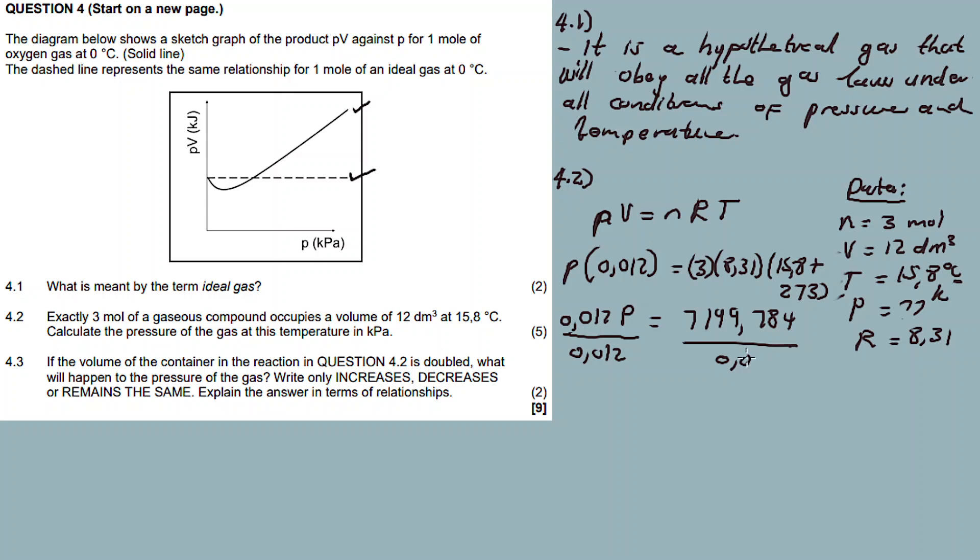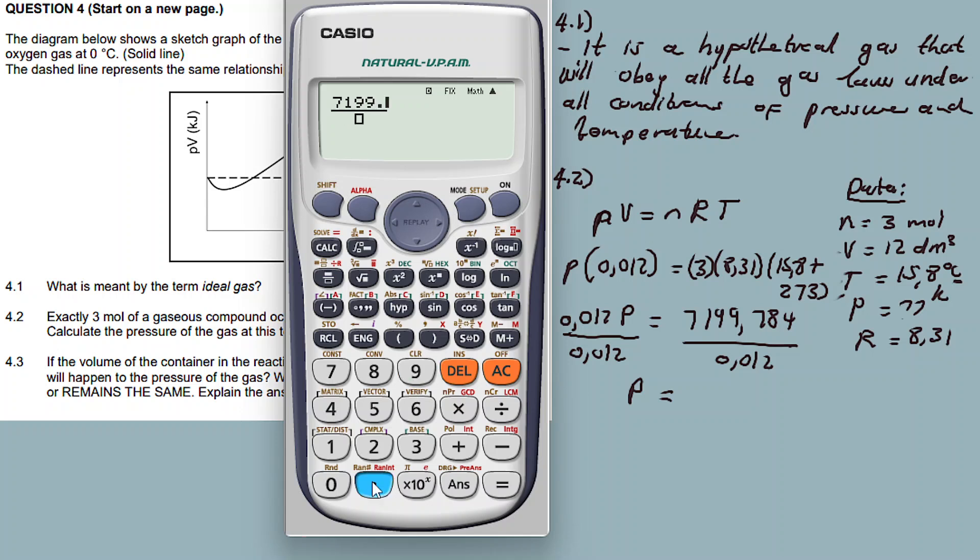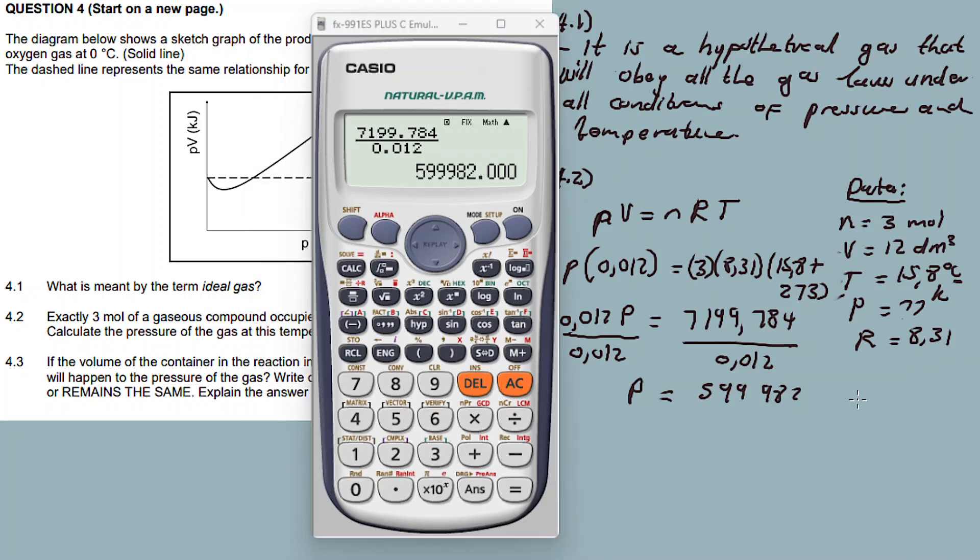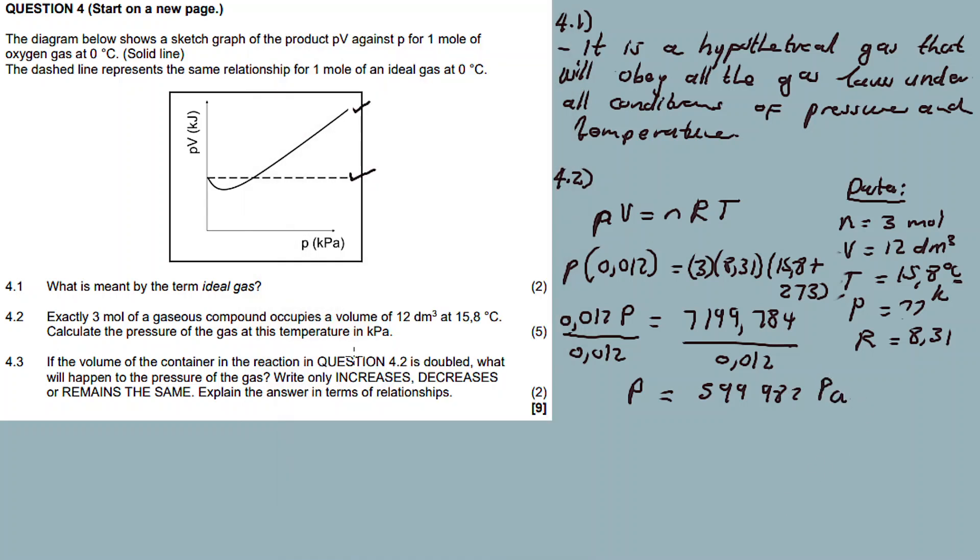So 3 times 8.31 times (15.8 + 273) equals 71999.784 Pa. Then P = 71999.784 / 0.012 = 599,982 pascals. But the answer must be in kilopascals, so divide by 1000: P = 599.982 kilopascals. This is our answer.